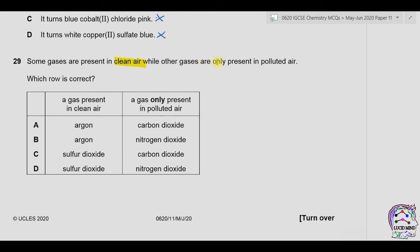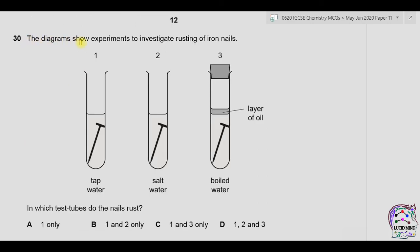Question twenty-nine: which row is correct for gases in clean air versus polluted air? Argon is a noble gas and not a pollutant — present in clean air. Sulfur dioxide is acidic and present in polluted air. On the polluted air side: carbon dioxide is also present in clean air so incorrect; nitrogen dioxide is an acidic gas present in polluted air. Option B — argon in clean air and NO₂ in polluted air — is correct.